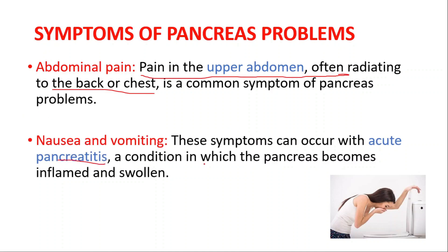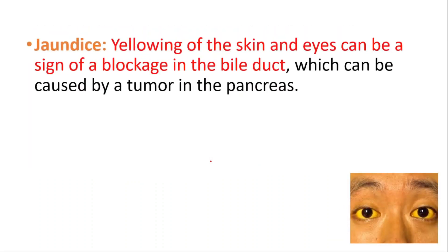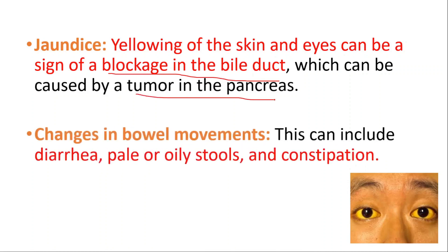Acute pancreatitis is a condition in which the pancreas becomes inflamed and swollen. Jaundice — yellowing of the skin and eyes — can be a sign of a blockage in the body, which can be caused by a tumor in the pancreas. Changes in bowel movements are also important, including diarrhea, pale or oily stools, and constipation.